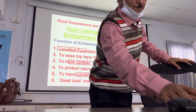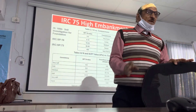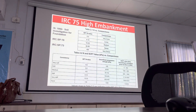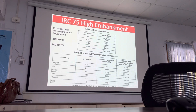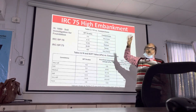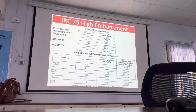When IRC says CBR 2%, it means two percent. The proof is IRC 75. Whatever I am speaking from is only from the IRC code, not a single sentence from outside the scope. Every proof is given on the next slide — it is written IRC 75. For SPT 0 to 4, it is very loose soil, poor soil, black cotton soil. What is the poorest soil?